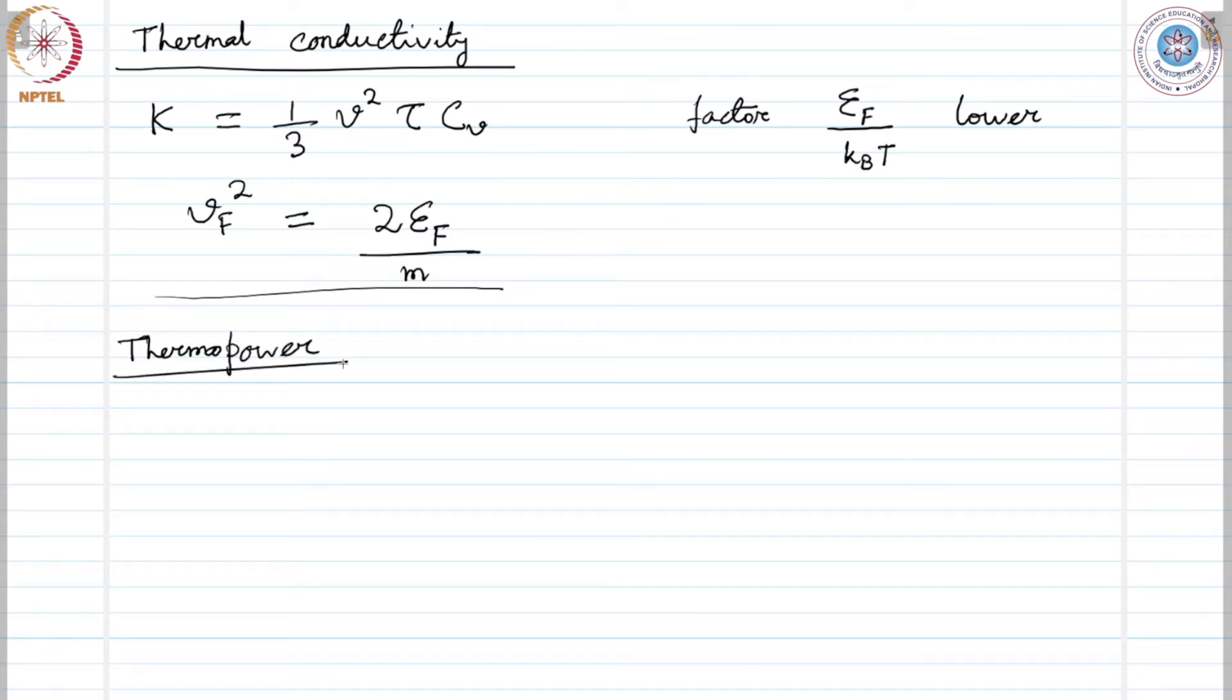Druder overestimated the thermo power and considering Fermi Dirac distribution applicable on electrons improves this one as well.